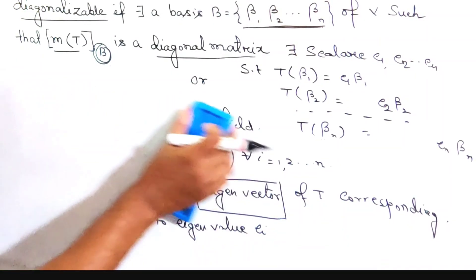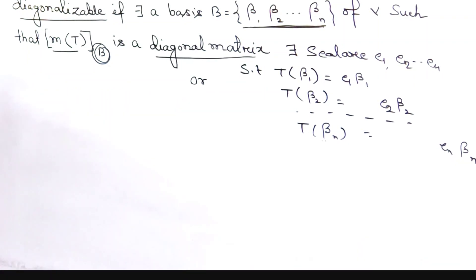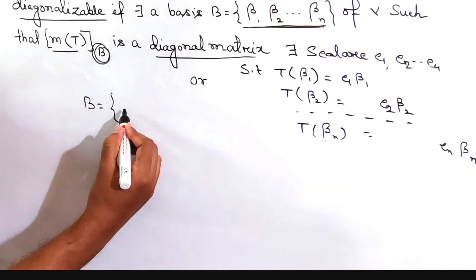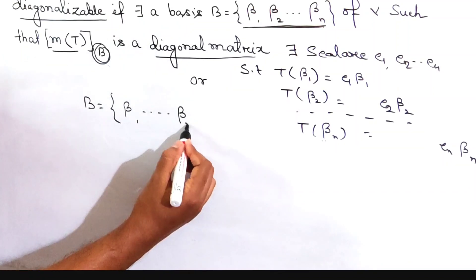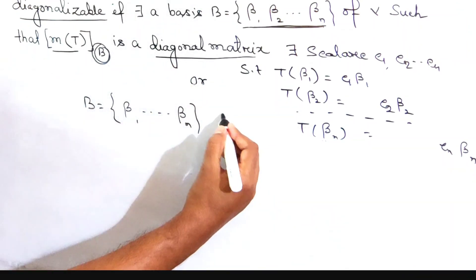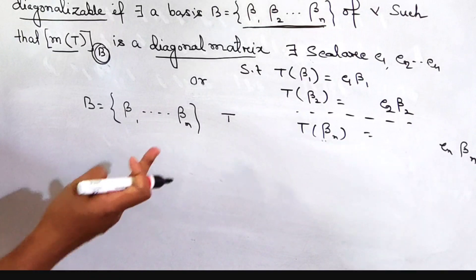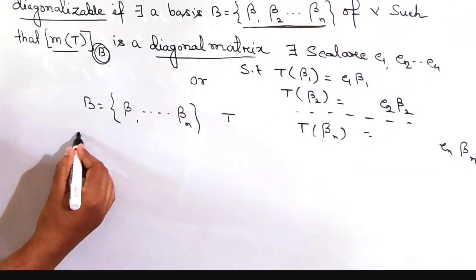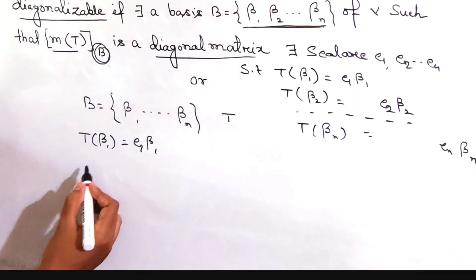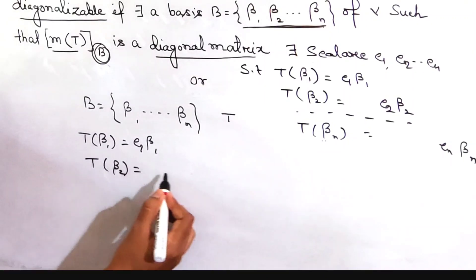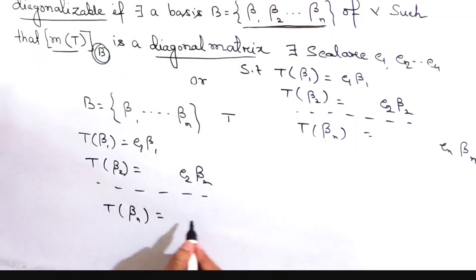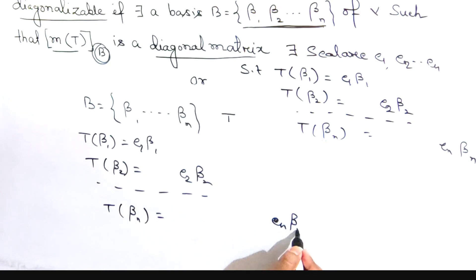For the converse, let B be a basis of V consisting of all the eigenvectors of T. Then we can easily write: T(β1) = C1·β1, T(β2) = C2·β2, and T(βn) = Cn·βn.